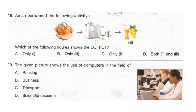Question 19: Aman performed the following activity. Look at the activity carefully. Which of the following figures shows the output? The correct answer is option B, only 3. Question 20: The given picture shows the use of computers in the field of dash. The correct answer is option D, scientific research.